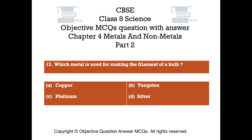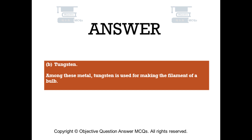Question number 13: Which metal is used for making the filament of a bulb? Option B: Tungsten. Option C: Platinum. Option D: Silver. The right answer is Option B — Tungsten. Among these metals, tungsten is used for making the filament of a bulb.